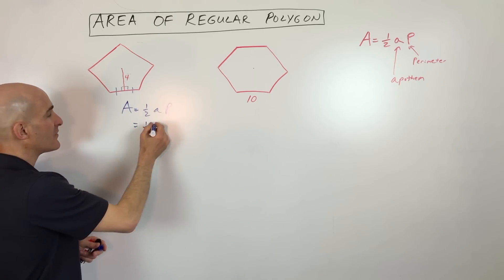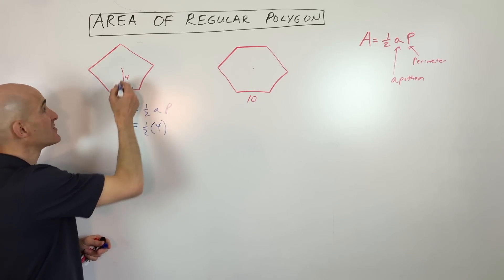Area equals one half apothem times perimeter. Now the apothem in this problem they gave us, they said it was four. It's that perpendicular distance to the side.